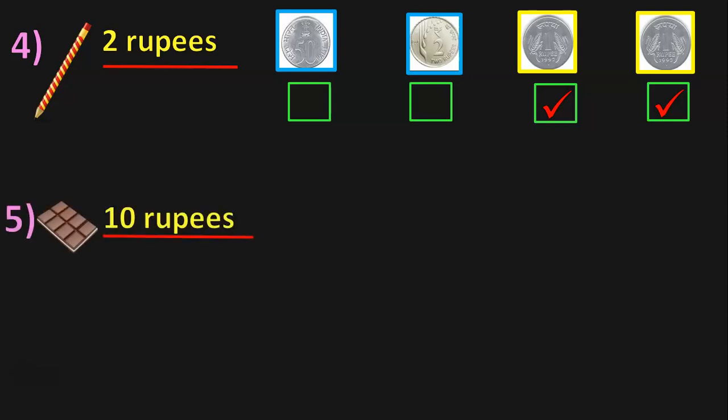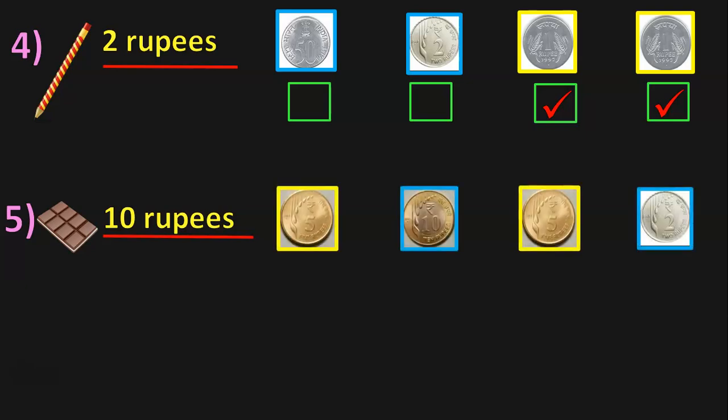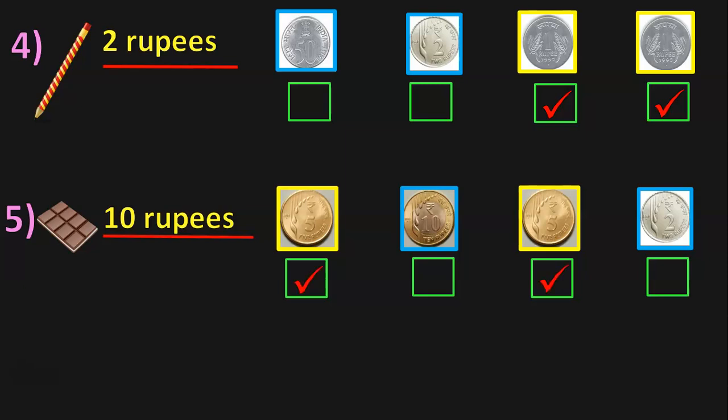We have a chocolate which is 10 rupees. We have a 5 rupees coin, a 10 rupees coin, another 5 rupees coin, and a 2 rupees coin. How will you make 10 rupees? Take two 5 rupees coins, or take one 10 rupees coin directly.